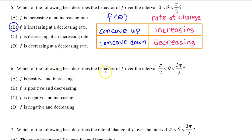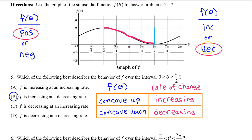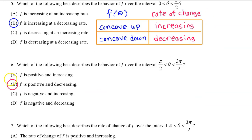Number 6: which of the following best describes the behavior of f over the interval from pi over 2 to 3 pi over 2 — is f positive or negative, and is f increasing or decreasing? I've highlighted that interval. All output values are above the x-axis, so f is positive on this interval. f is clearly decreasing, as the output values are falling from left to right. So on this interval, f is positive and decreasing. The answer is b.